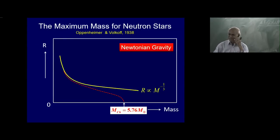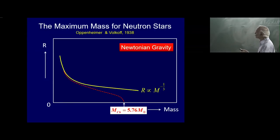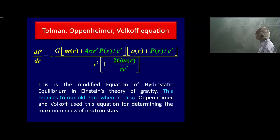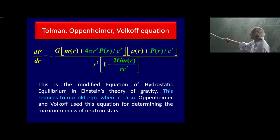But is that the limiting mass for neutron stars? No. That is the limiting mass if you use Newtonian gravity. Oppenheimer told Volkov: don't do that — use the general relativistic equation of hydrostatic equilibrium.